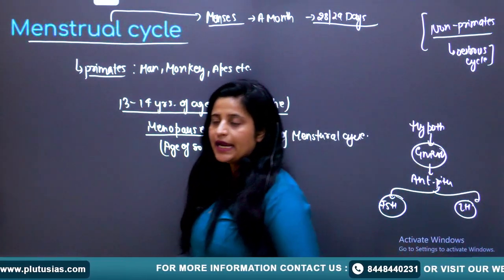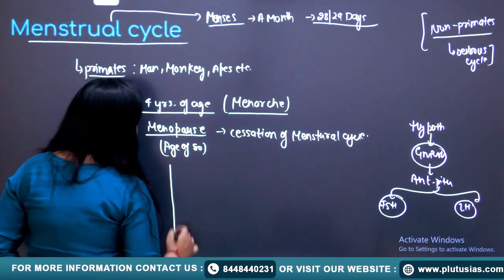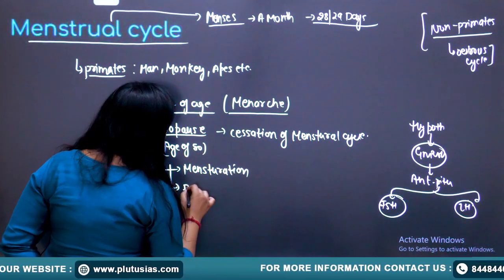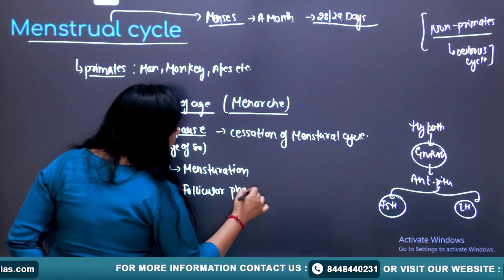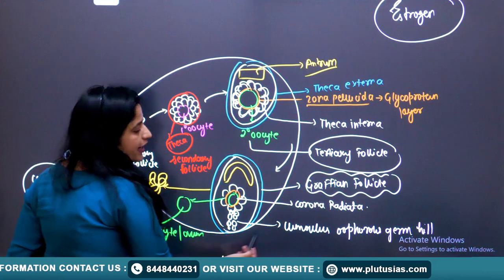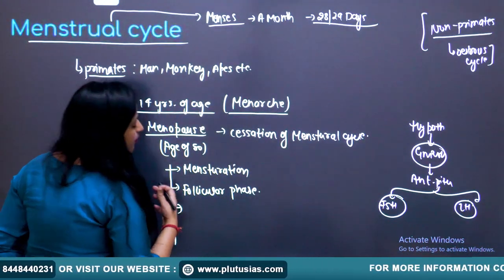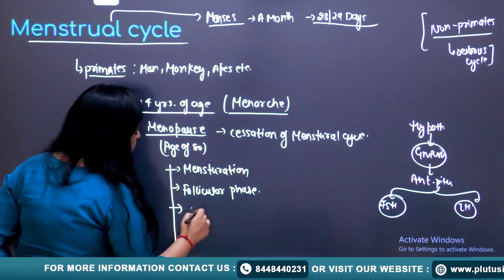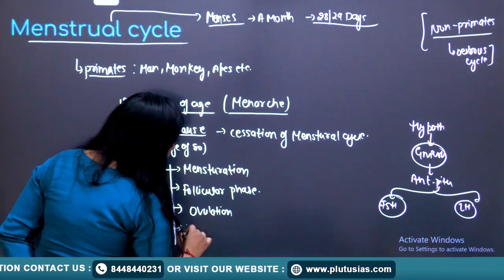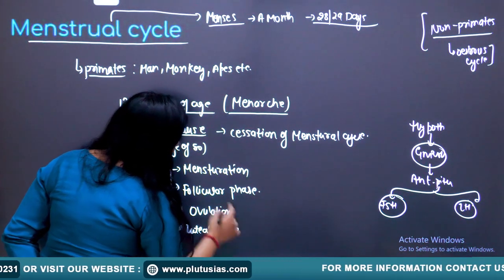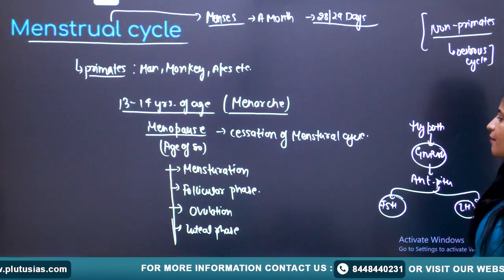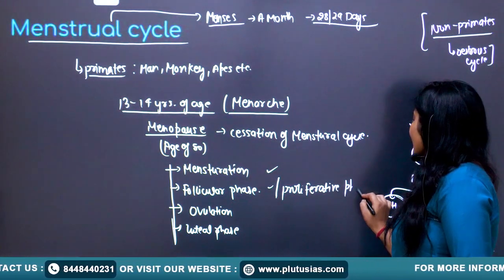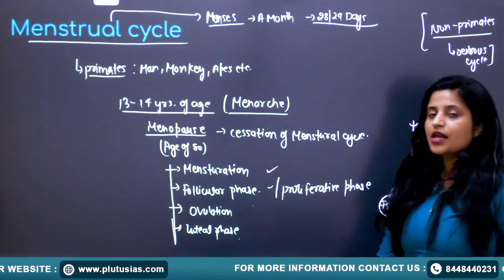The menstrual cycle is completed in four phases. The first is the menstruation phase (bleeding phase). The second is the follicular phase, also known as the proliferative phase, which involves the development of follicles. The third is the ovulation phase, which happens at the 14th day. The fourth is the luteal phase.